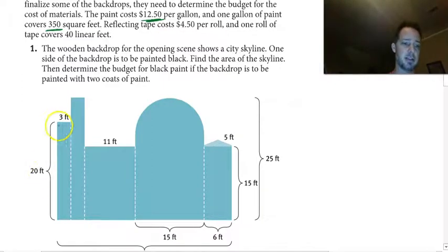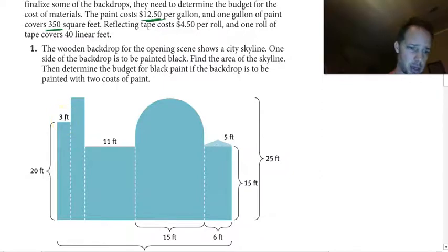This first rectangle is 20 by 3, giving us 60 square feet.